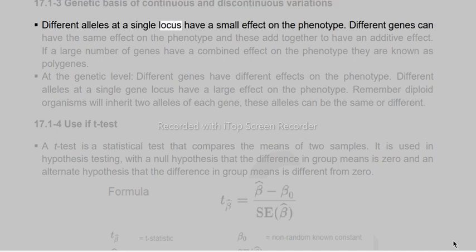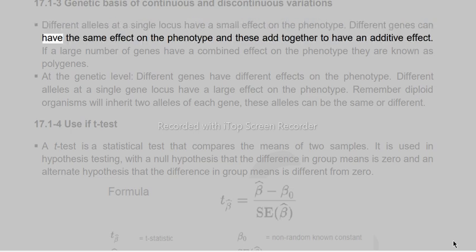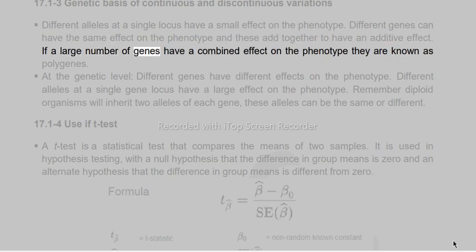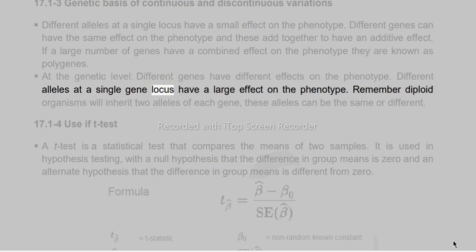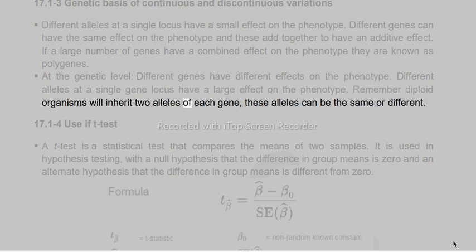Different alleles at a single locus have a small effect on the phenotype. Different genes can have the same effect on the phenotype, adding together to have an additive effect. If a large number of genes have a combined effect on the phenotype they are known as polygenes. Different alleles at a single gene locus can also have a large effect on the phenotype. Diploid organisms inherit two alleles of each gene, which can be the same or different.